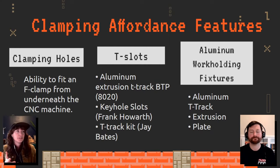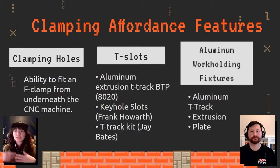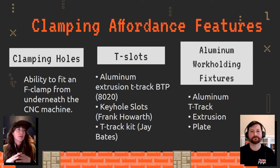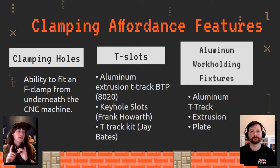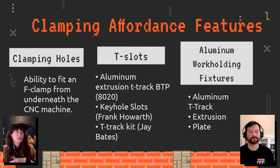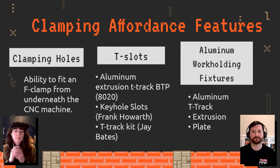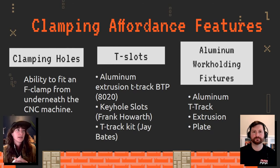Let's move on to clamping affordance features — the ability to use different types of clamping on your spoil board. One feature is clamping holes: through holes to mount something like an F-clamp or quick clamp through the spoil board so it sticks beneath the work surface. We'll show images of each of these so you can get a better idea. We also have T-slots, which come in all shapes and forms.